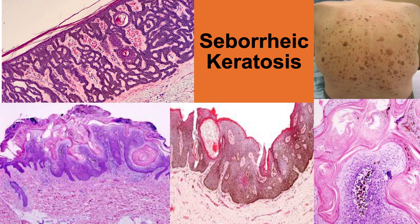Seborrheic keratosis does not seem to be related to human papilloma virus infection. However, HPV infection can be identified in seborrheic keratosis-like lesions of patients with epidermodysplasia verruciformis and in those exhibiting bowenoid changes. Lesions exhibiting bowenoid changes should probably be interpreted as condylomas rather than as true seborrheic keratosis.